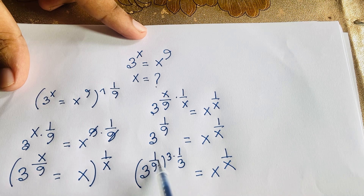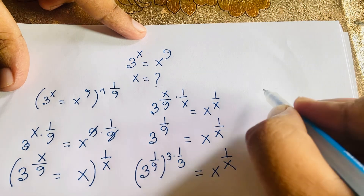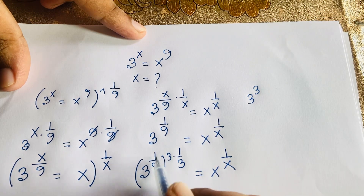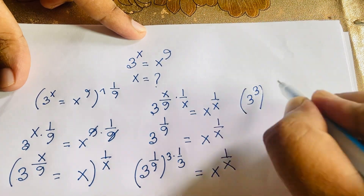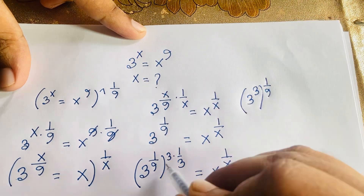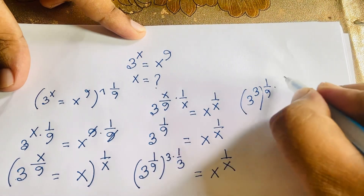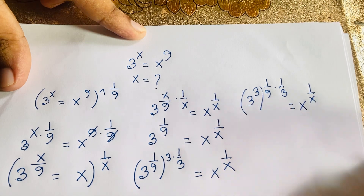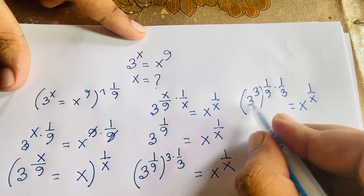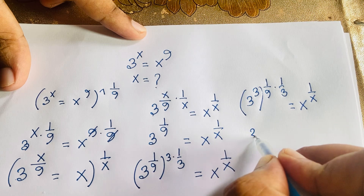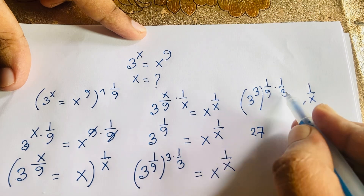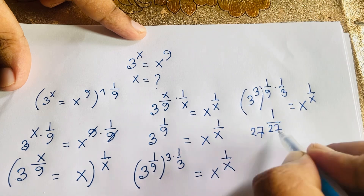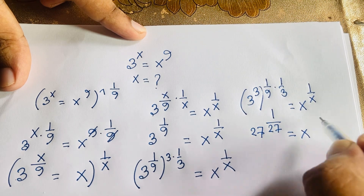Now I exchange this power. It will be 3 to the power 3, and here is 1 over 9, so I move the power: 1 over 9 times 1 over 3. So 3 to the power 3 is 27, and the power becomes 1 over 27 — so 27 to the power 1 over 27 is equal to x to the power 1 over x.